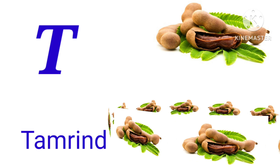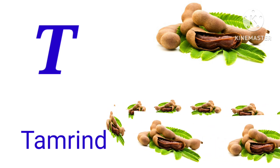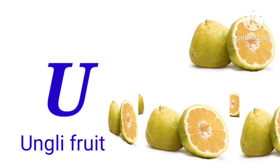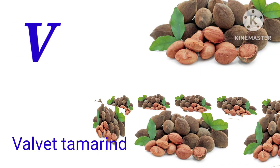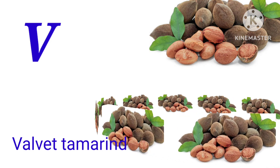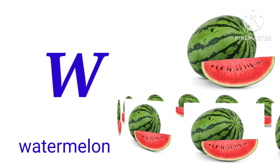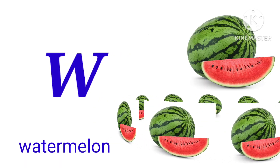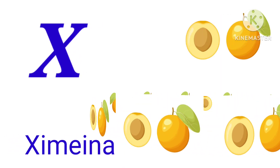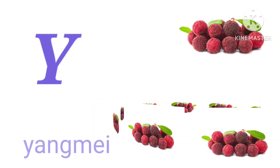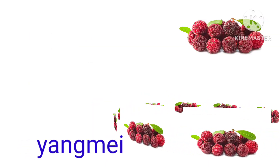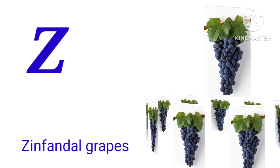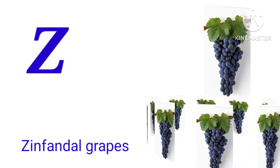T for tamarind, U for ugly fruit, V for velvet tamarind, W for watermelon, X for ixminia, Y for yellow fruit, Z for ziziphus.